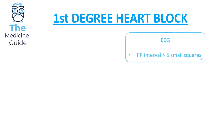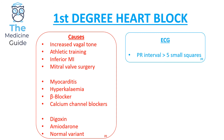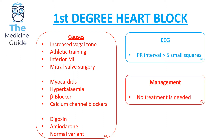The causes of first degree heart block involve increased vagal tone, athletic training, an inferior MI, mitral valve surgery, myocarditis, hyperkalaemia, and medications such as beta blockers, calcium channel blockers, digoxin, and amiodarone. One thing to consider is that first degree heart block might be considered a normal variant in some patients. First degree heart block doesn't involve any form of treatment.